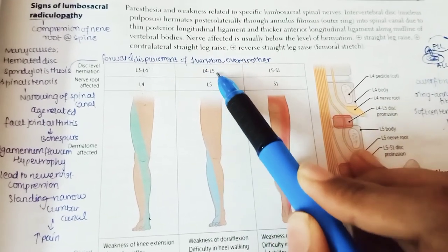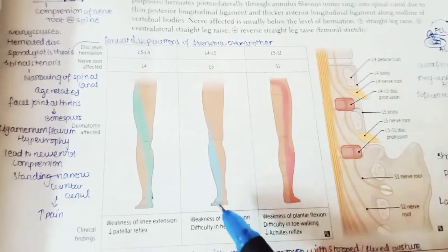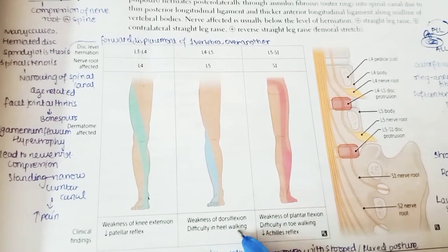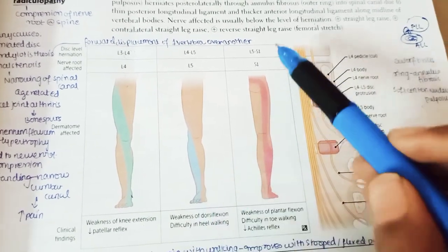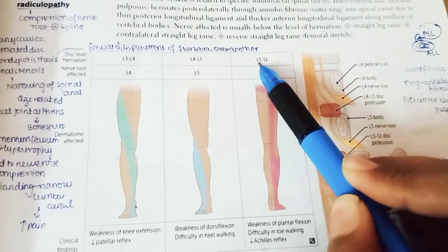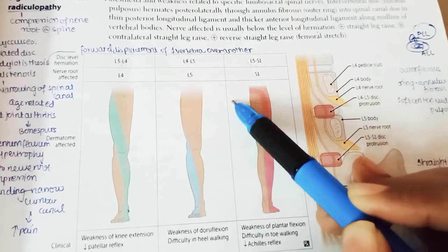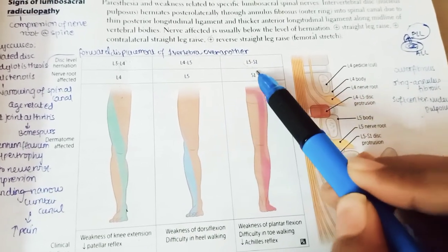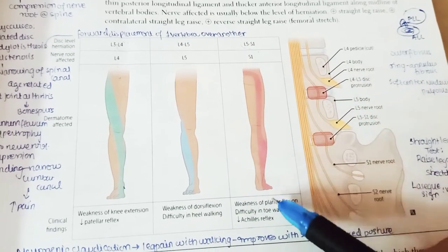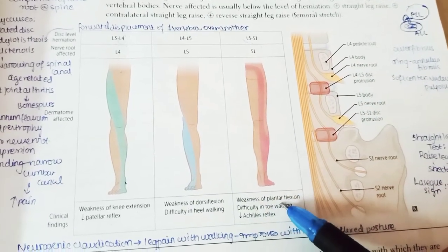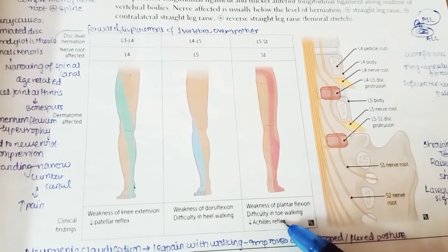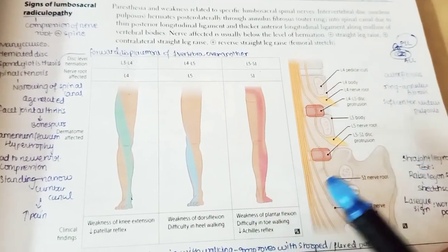If the herniation is between L4–L5, the affected nerve will be L5, causing weakness of dorsiflexion and difficulty in heel walking. If herniation is between L5–S1, the S1 nerve is mostly affected, causing weakness of plantar flexion, difficulty in toe walking, and decreased Achilles reflex.